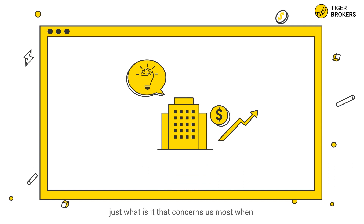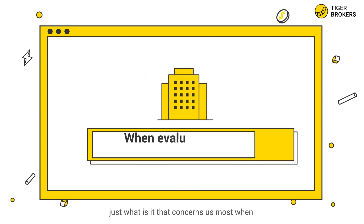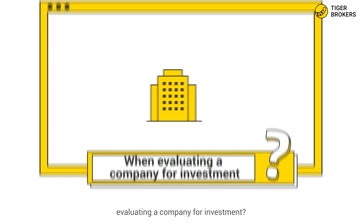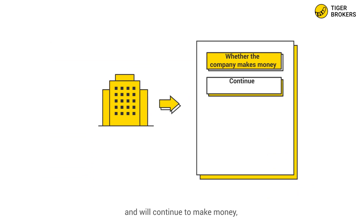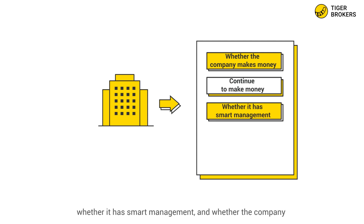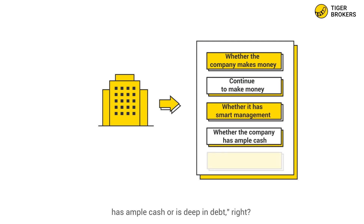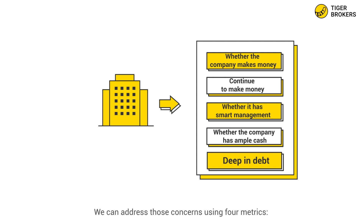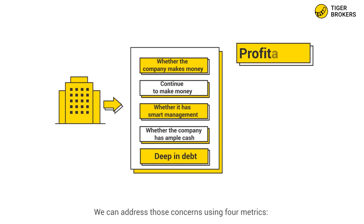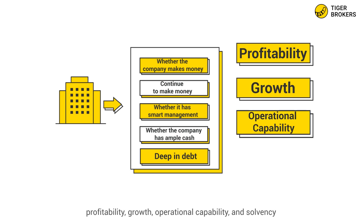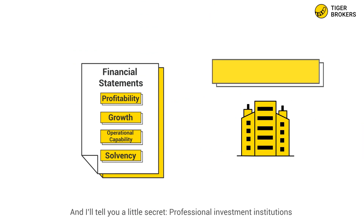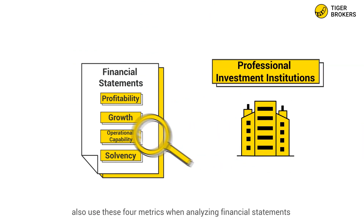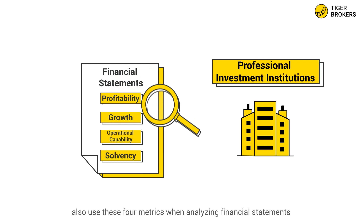When you think about it, just what is it that concerns us most when evaluating a company for investment? I guess you'd say whether the company makes money and will continue to make money, whether it has smart management, and whether the company has ample cash or is deep in debt, right? We can address those concerns using four metrics: profitability, growth, operational capability, and solvency. Professional investment institutions also use these four metrics when analyzing financial statements.